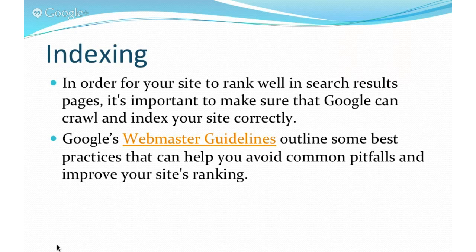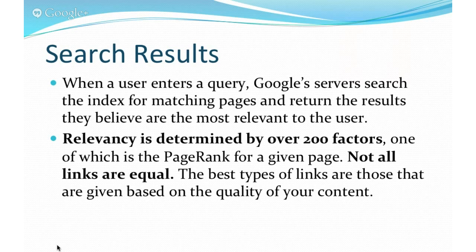All of us want our sites to rank well in search results. In order to rank, you must ensure that Google can crawl and index your site. Google wants to ensure that a user's search results are as relevant as possible — relevancy is determined by over 200 factors. Don't put too much emphasis on PageRank; it is only one factor. PageRank is determined by the number of sites linking to your site, but Google evaluates those sites. Low-quality links won't impact PageRank much. Google is looking for organic links — links created by real users.